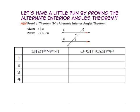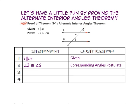Let's prove the Alternate Interior Angles Theorem. We start with line L parallel to line M because it is given. To prove that angle 4 is congruent to angle 6, let's look at the relationship between angle 2 and angle 6. Since they are corresponding angles, they are congruent. Next, angle 2 is congruent to angle 4 because they are vertical angles. And finally, because both angle 6 and angle 4 are congruent to angle 2, they are congruent to each other by the Transitive Property of Congruence.